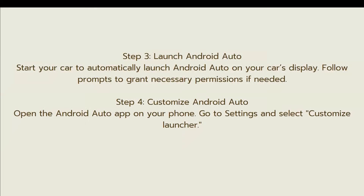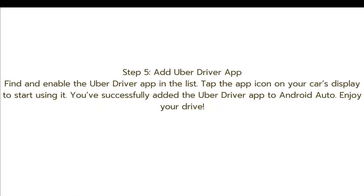Open the Android Auto app on your phone, go to Settings, and select Customize Launcher. The fifth and final step is to add the Uber Driver app — find and enable it in the list. Tap the app icon on your car's display to start using it. And that's it — you've successfully added the Uber Driver app to Android Auto!